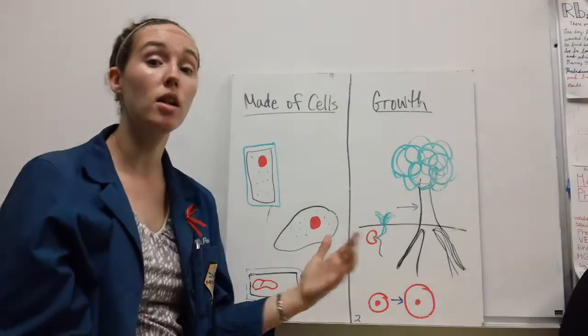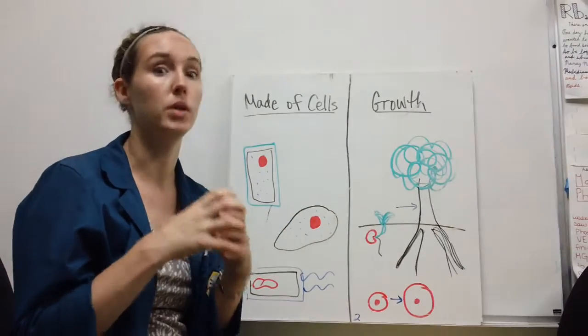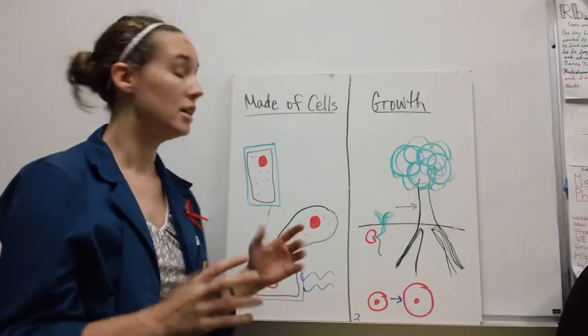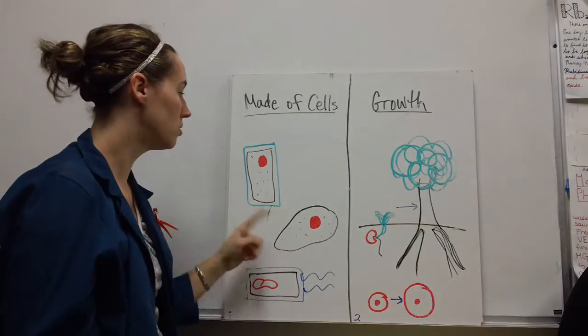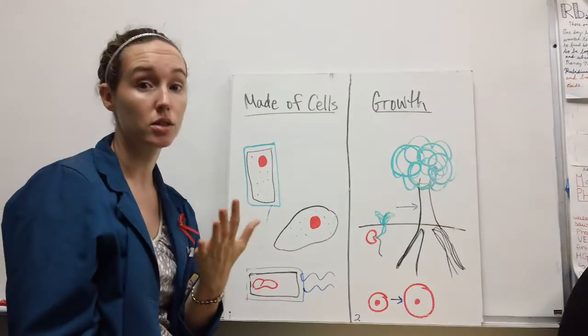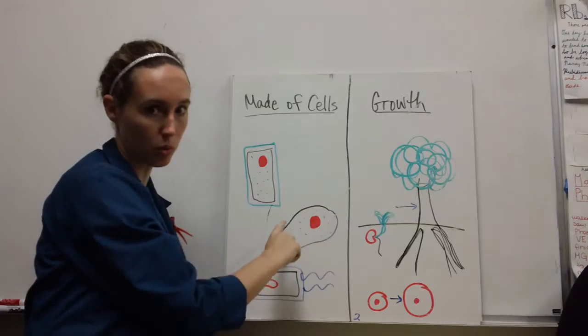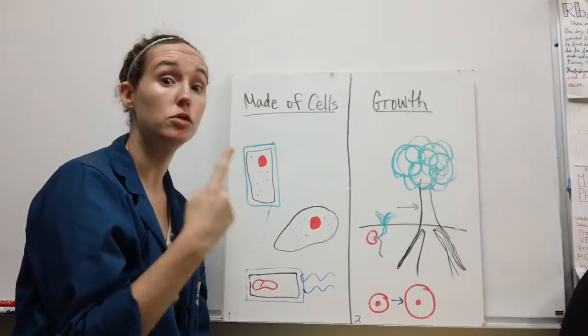First and foremost, all living things are made of cells. Cells are the building blocks of life; anything less than a cell is not alive. Some cells have a rigid cell wall. Eukaryotic cells have a nucleus but they may not have a cell wall.